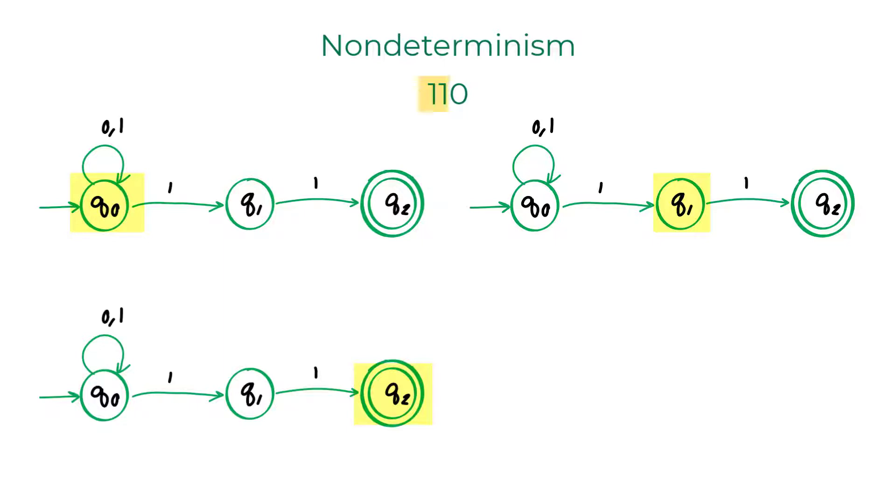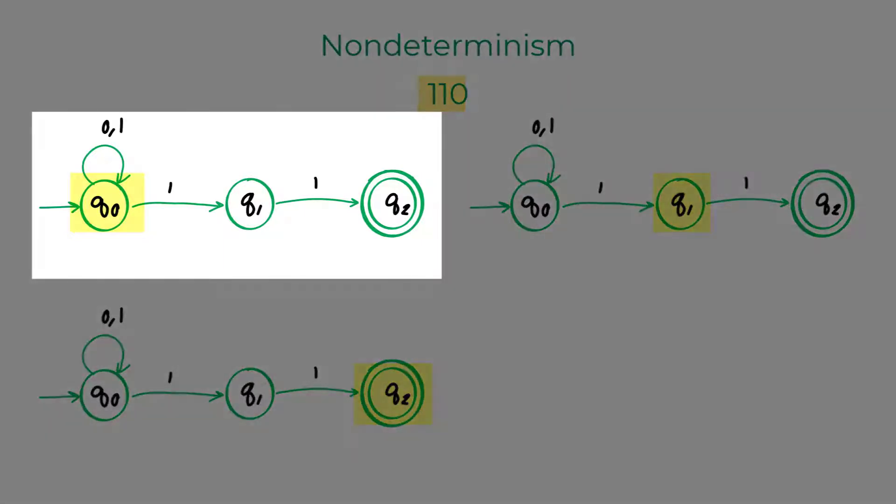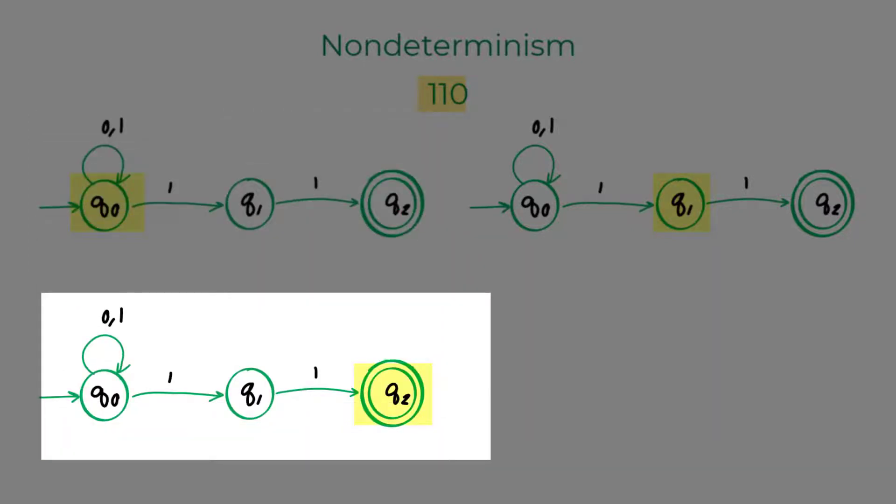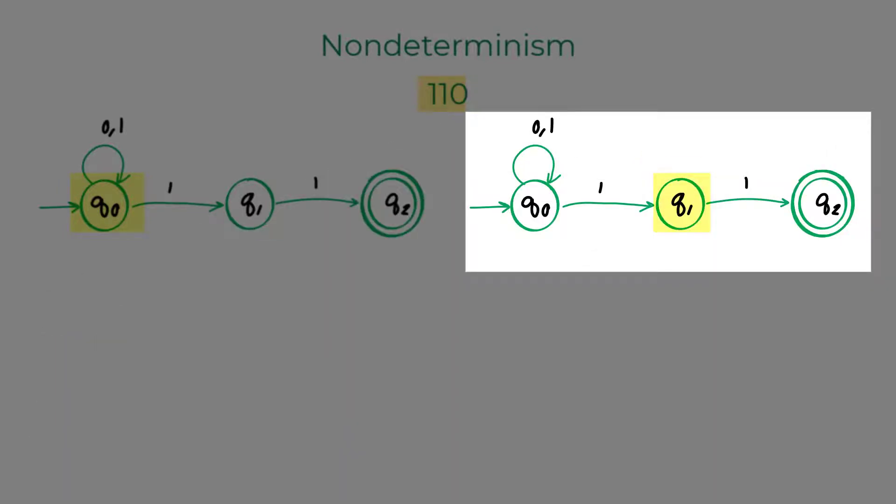Then, we have the last character of the string, which is 0. We will run all these three machines on this character. The first machine transitions back to Q0 on the character 0. The second machine is in the state Q2, which does not have a transition for the character 0. So, the second machine sort of dies. Same is the case with the third machine here. Q1 does not have transition for 0. So, it dies as well.